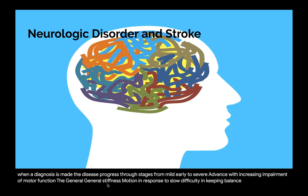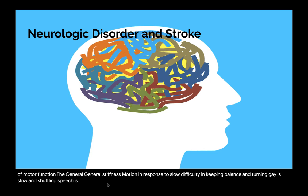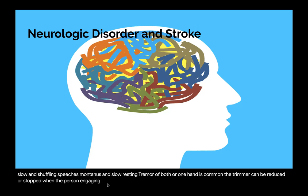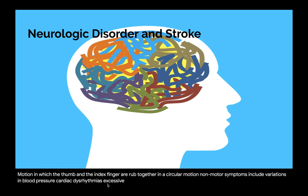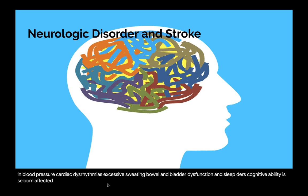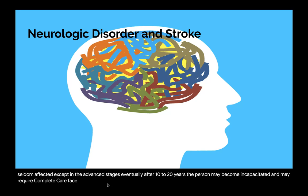General manifestations include body posture bent with bent head and general stiffness, slow motion and response, difficulty keeping balance and turning, slow and shuffling gait, and monotonous and slow speech. Resting tremor of both or one hand is common; the tremor can be reduced or stopped when the person engages in a purposeful action such as tooth brushing. The fingers may be involved in a pill-rolling motion. Non-motor symptoms include variations in blood pressure, cardiac dysrhythmias, excessive sweating, bowel and bladder dysfunction, and sleep disorders. Cognitive ability is seldom affected except in advanced stages.